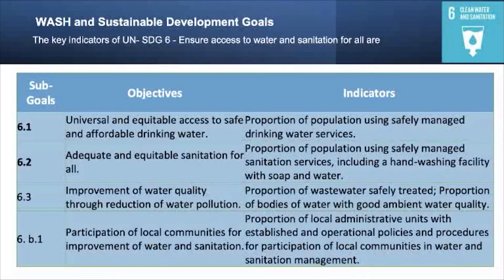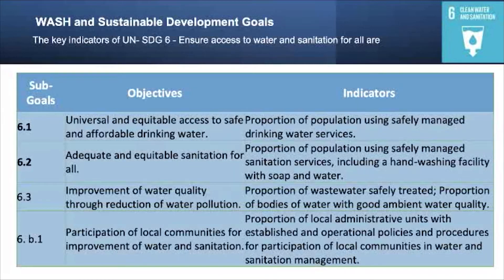Target 6.1 is universal and equitable access to safe and affordable drinking water. The indicator here is the proportion of population using safely managed drinking water resources. Target 6.2 is adequate and equitable sanitation for all, with the indicator being proportion of population using safely managed sanitation services including hand washing facility with soap and water. Target 6.3 is improvement of water quality through reduction in water pollution, with indicators covering proportion of wastewater safely treated and proportion of bodies of water with good ambient water quality.